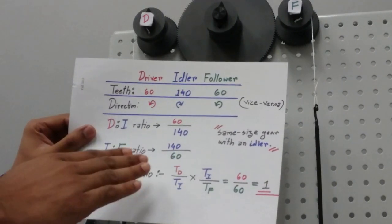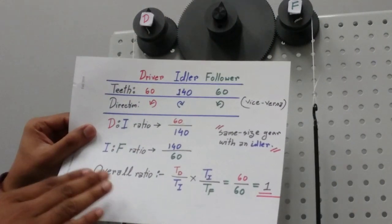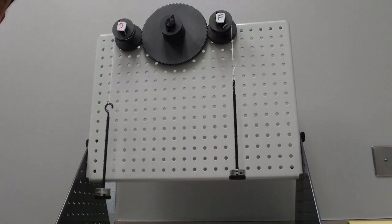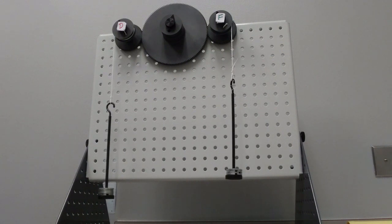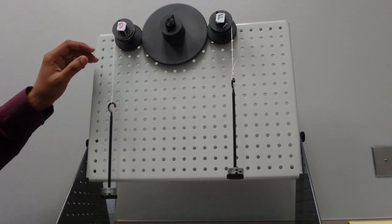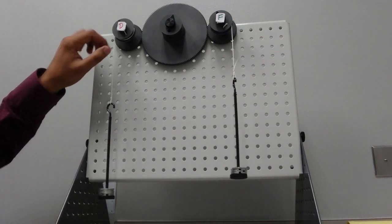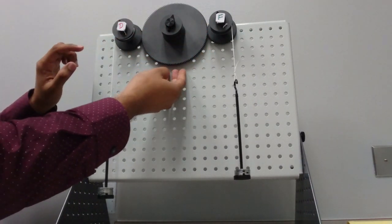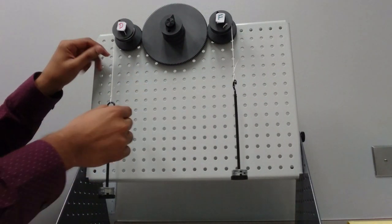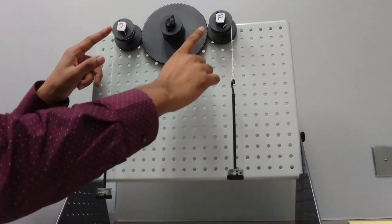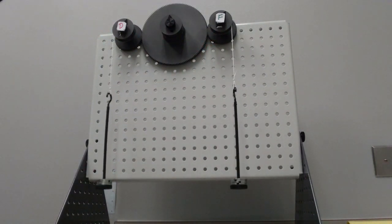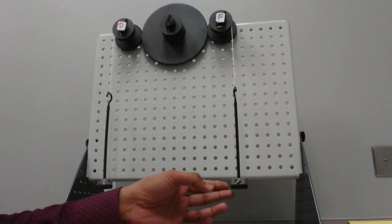So the overall ratio is 60 over 60, which equals 1. For same-size gears with an idler, the idler has no effect on the overall velocity ratio. One notable difference from previous setups is that the idler gives us the opportunity to place the wires on opposite sides of the driver and follower drums.